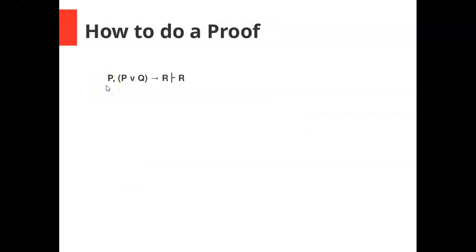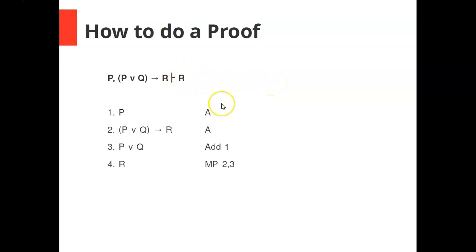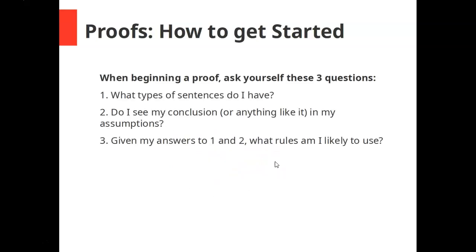Just as a quick review, here's a proof for us to do. You're given a sequence; everything to the left of the turnstile inference bar is an assumption, and the sentence to the right is the conclusion. Lines one and two are justified because they were given as assumptions; lines three and four are justified by rules of inference. If you don't know how to get going, ask yourself three questions: What types of sentences do I have? Do I see my conclusion or anything like it in my assumptions? Given my answers to one and two, what rules am I likely to use?